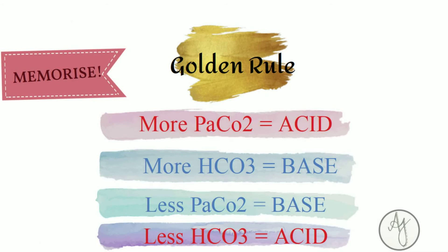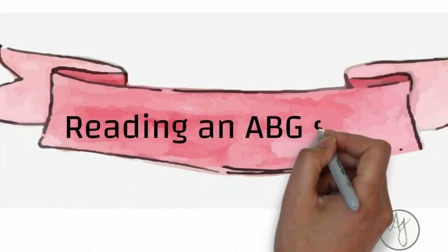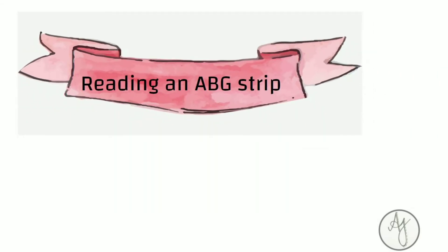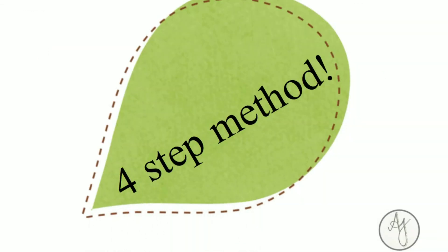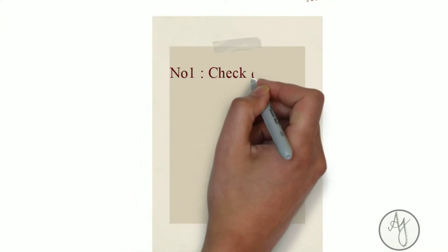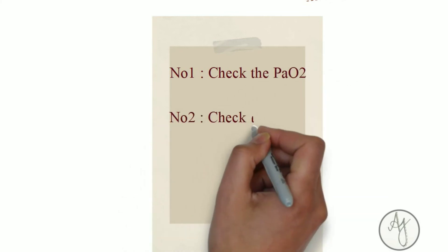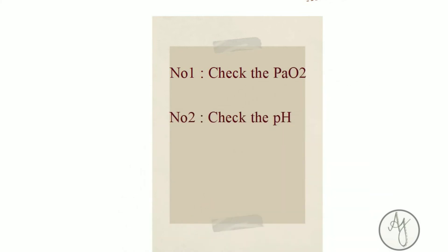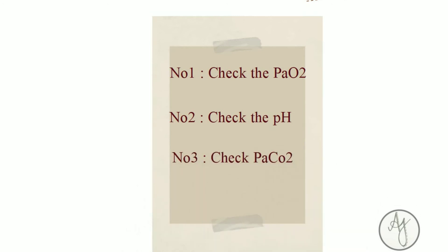So how do we approach reading an ABG strip? I have a foolproof four-step method that works every time, and the sequence is very important. Number one: check the oxygen level. Number two: check the pH. Number three: check the carbon dioxide. And lastly, number four: check the bicarbonate.